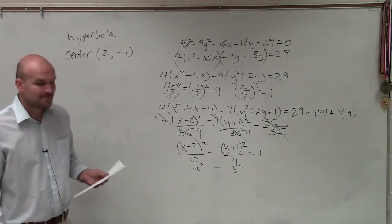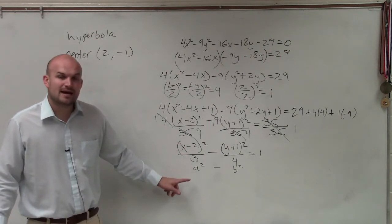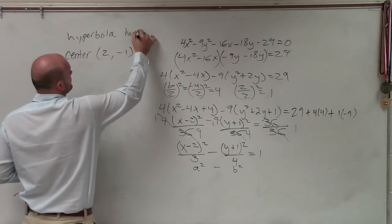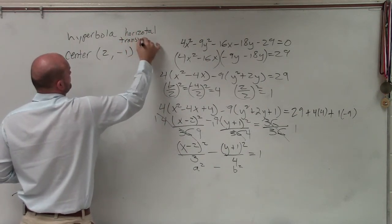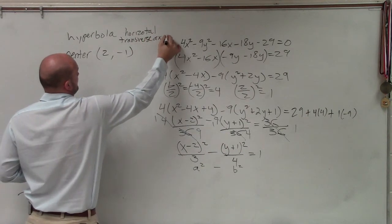is because remember it's always a squared minus b squared for hyperbolas, right? Always. So since my x is over my a, it's horizontal transverse axis.